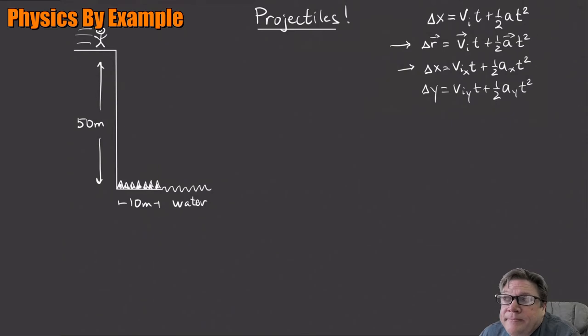In the x direction, I have delta x equals v initial x times t plus one-half acceleration x times t squared. Same for y: delta y equals v initial y times t plus one-half a y t squared. Look at the x equation. This person has a certain v initial in the x direction - that's what we're trying to find, some horizontal speed initially running off the cliff.